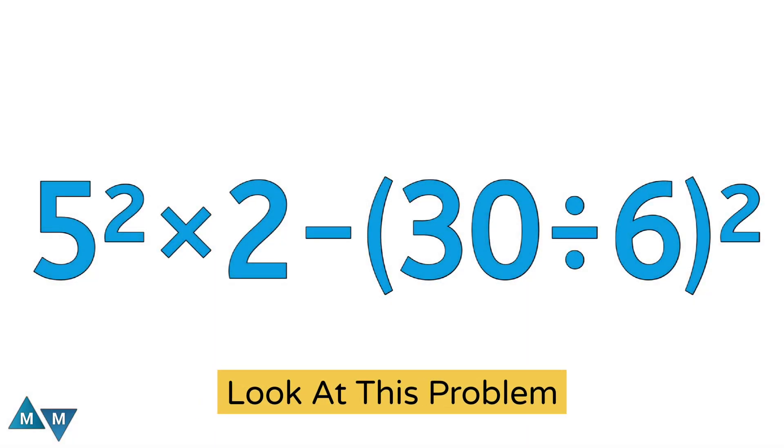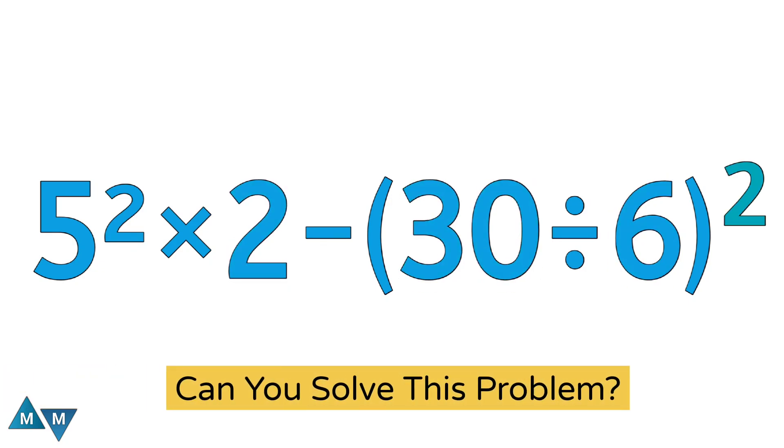Hi, guys. Look at this problem. The problem is 5 squared times 2 minus parentheses, 30 divided by 6 whole square. Can you solve this problem?